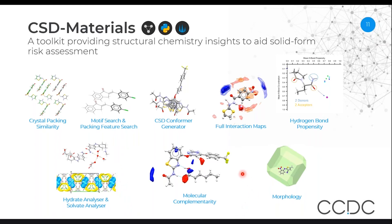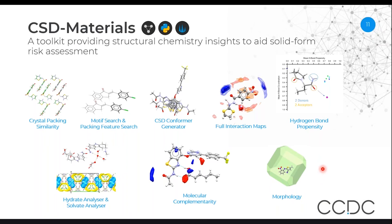We have tools for doing molecular complementarity — determining if a particular molecule is likely to co-crystallize with a different molecule based on descriptors we've developed. And we also have tools for looking at the theoretical morphology, so what the shape of the actual crystal that a molecule might form would look like.